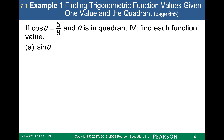One of the first fundamental identities is going to help us relate sine and cosine to one another. If we know that cosine of an angle is 5 over 8 and it's located in quadrant 4, then we want to find the sine theta value. This is an alternate way of doing that — I can use the fundamental identity sine squared theta plus cosine squared theta equals 1.